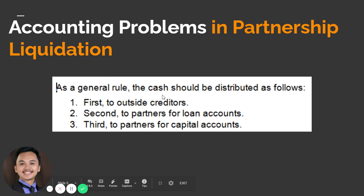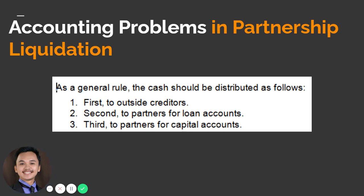As a general rule, cash should be distributed as follows: first, to the outside creditors — may it be your suppliers, your banks, or the government for outstanding liabilities. Second, to partners for loan accounts — payment of the liability of the partnership to the partners. And the third one is to partners' capital accounts. These are the three hierarchy to be followed in terms of distributing cash: first to outside creditors, second to partners' loan accounts, and third to partners' capital accounts.